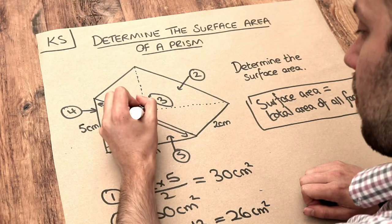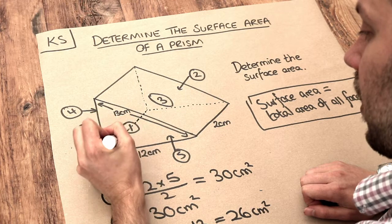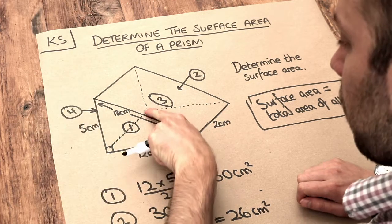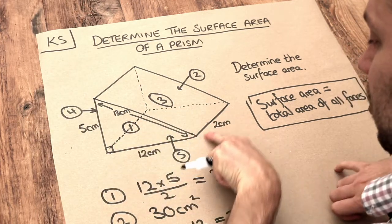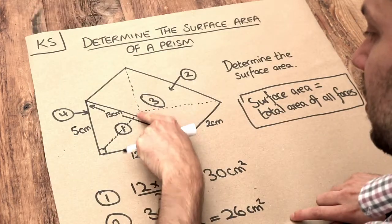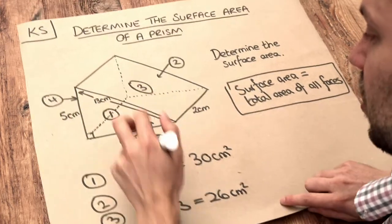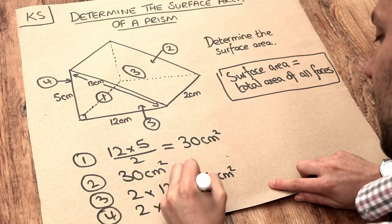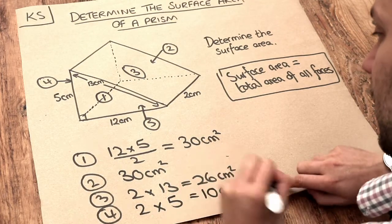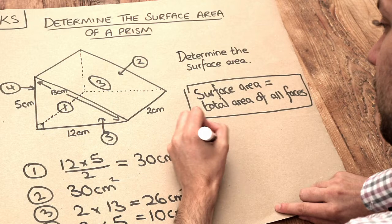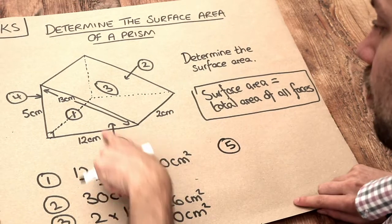And then we've got four, that's this back rectangle here. It's going to be this width here times this height here. This width is 2 centimeters, so it's 2 multiplied by that height which is 5, and that gives you 10 centimeters squared.